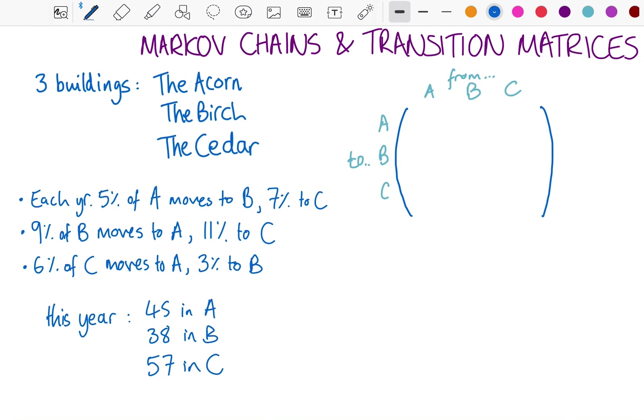What they are in general is some kind of situation that moves along in discrete steps as an iterative process, where people or things or objects may move between different options at the end of each step. Let's say an international school has 140 teachers, and they house them in three different apartment buildings: the Acorn, the Birch, and the Cedar.